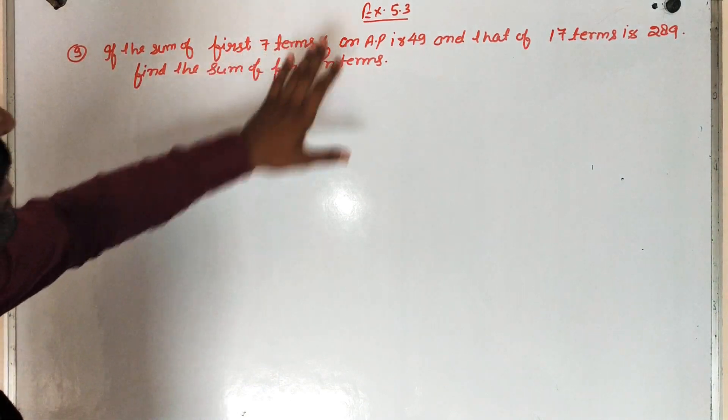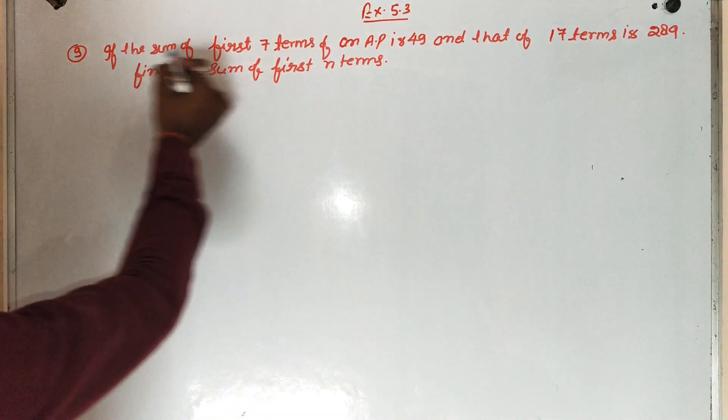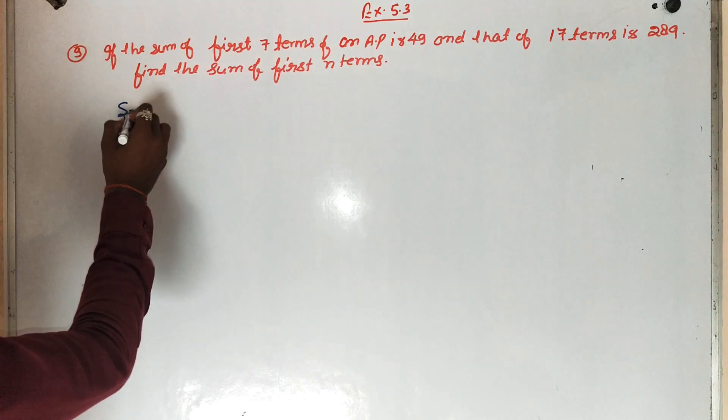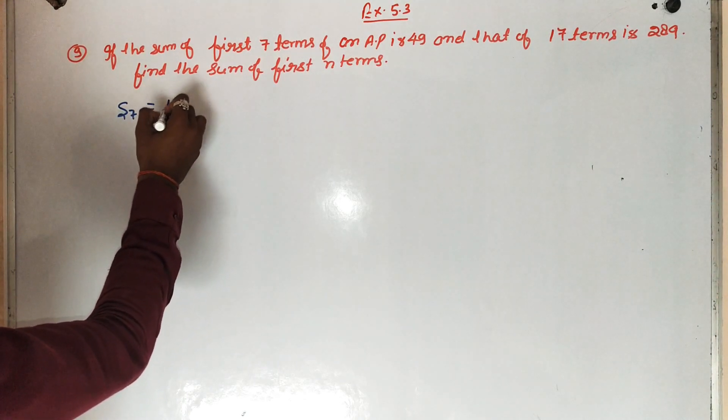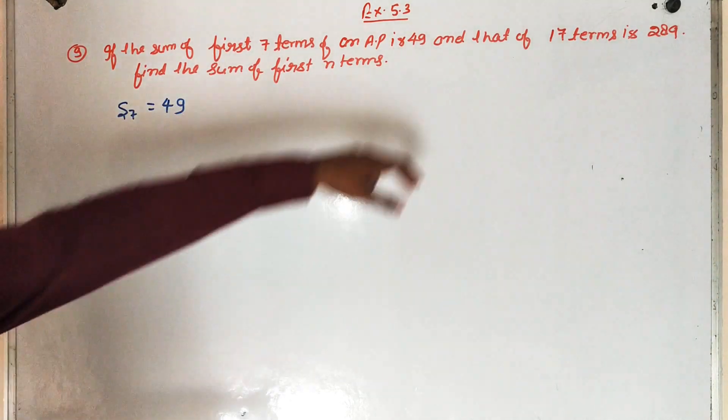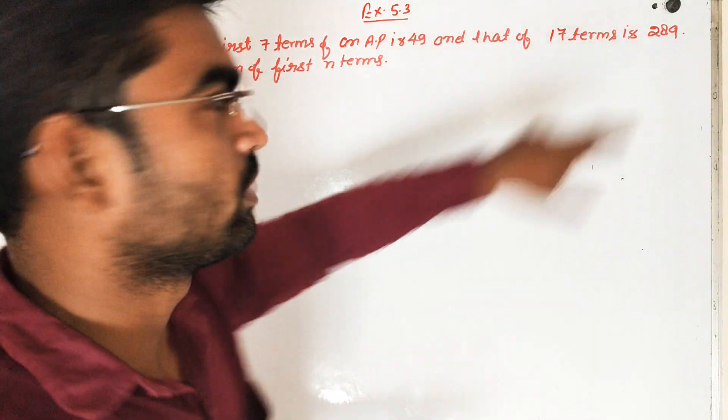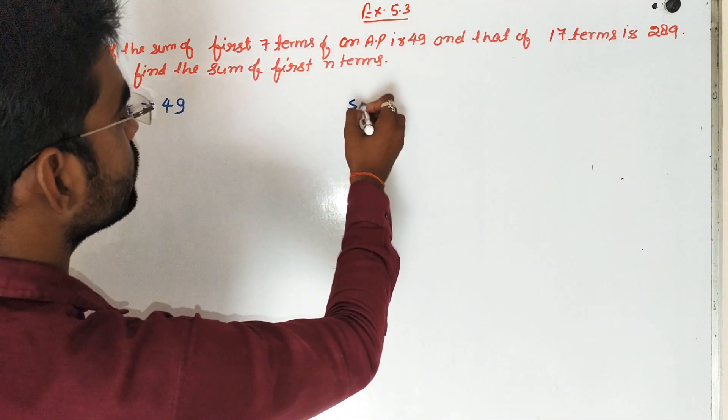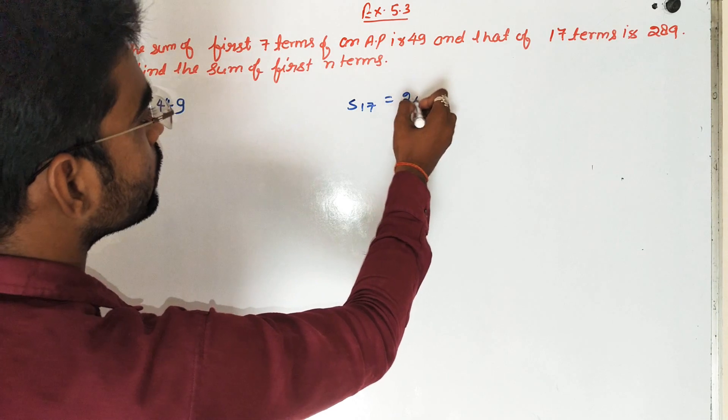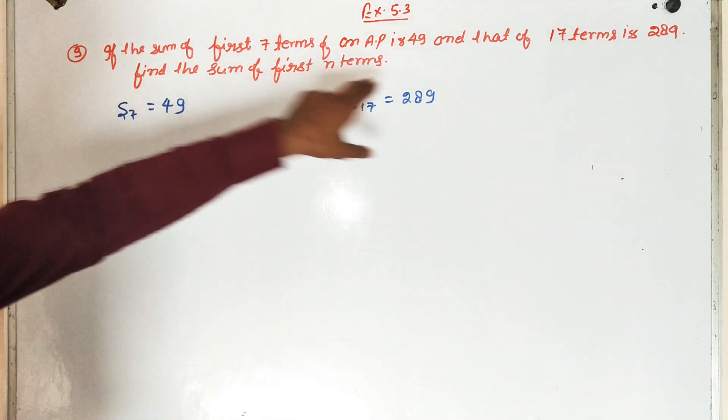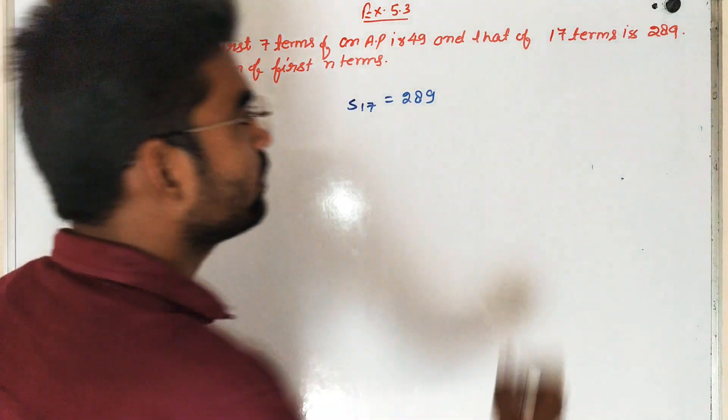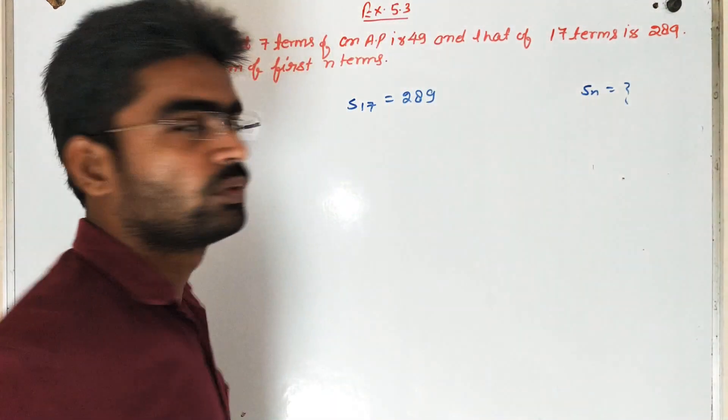If the sum of first 7 terms of an AP is 49 and that of 17 terms is equal to 289, then find the sum of first N terms.